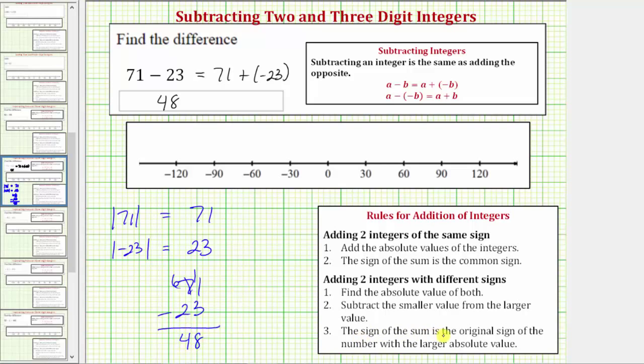And the sign of the sum is the original sign of the number with the larger absolute value. So because the positive 71 has the larger absolute value, the sum, which equals the difference, is positive 48. Which again, we already knew, but this is how we would get 48 using the rules for adding integers.